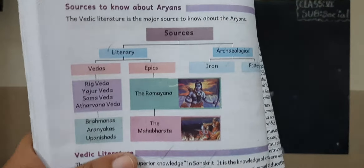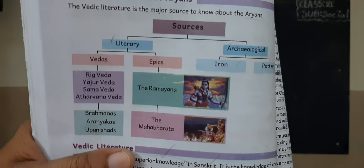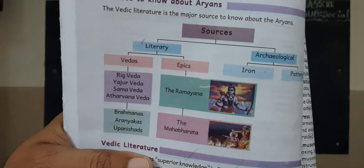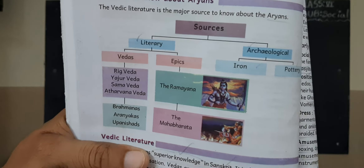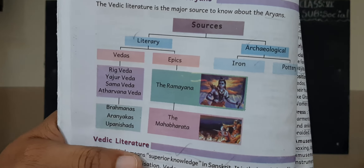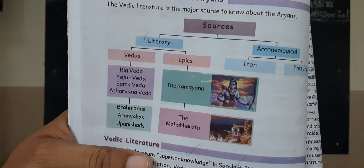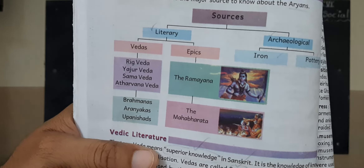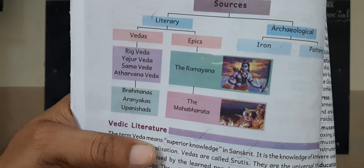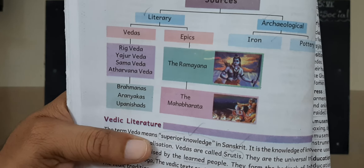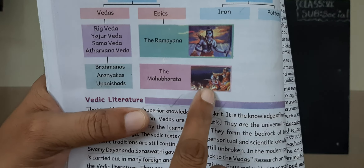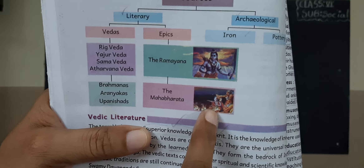I said already, I wrote on the blackboard: the sources are literary evidence and archaeological evidence. Under literary evidence: Vedas, epics. Apart from Vedas — Brahmanas, Aranyakas, and Upanishads. And epics: Ramayana and Mahabharata, which we know already.